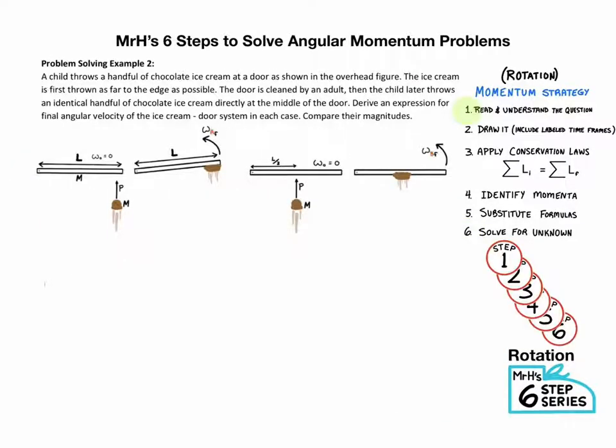A child decides to throw a handful of chocolate onto a door causing it to stick to the door and swing with an angular velocity final. Some time later, after the door is clean, that same child throws another handful of chocolate ice cream, this time right smack dab in the middle of the door. And we want to compare those two final angular velocities, both A and B.